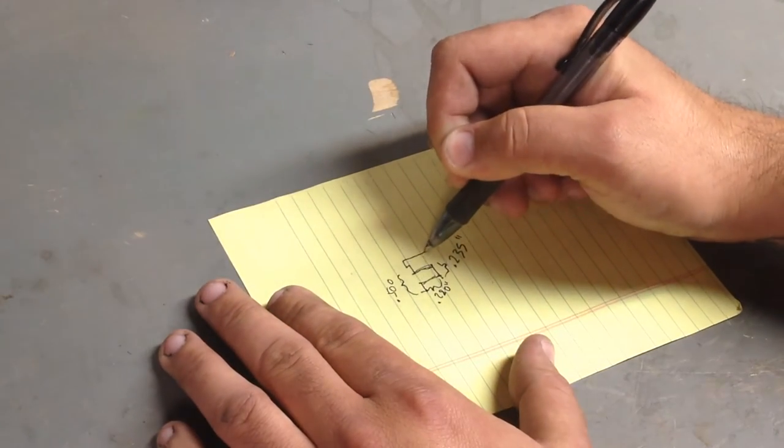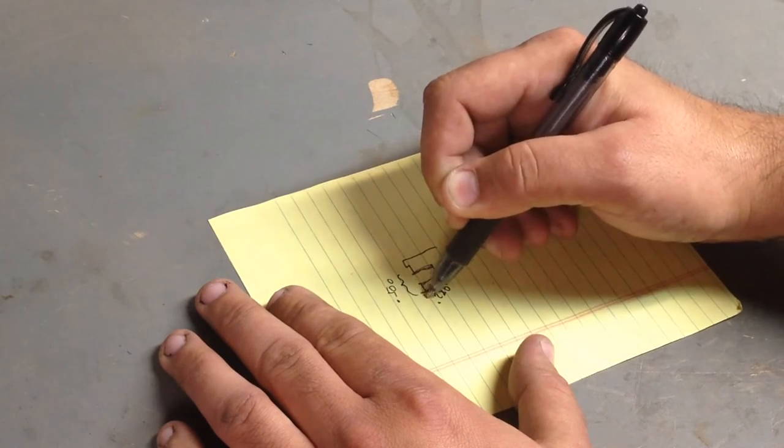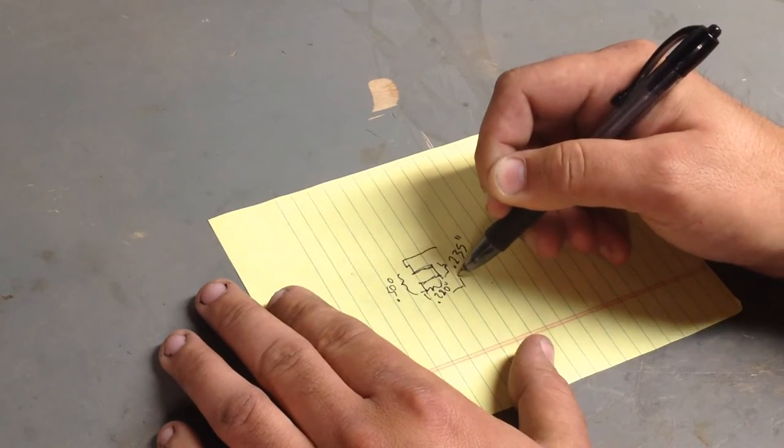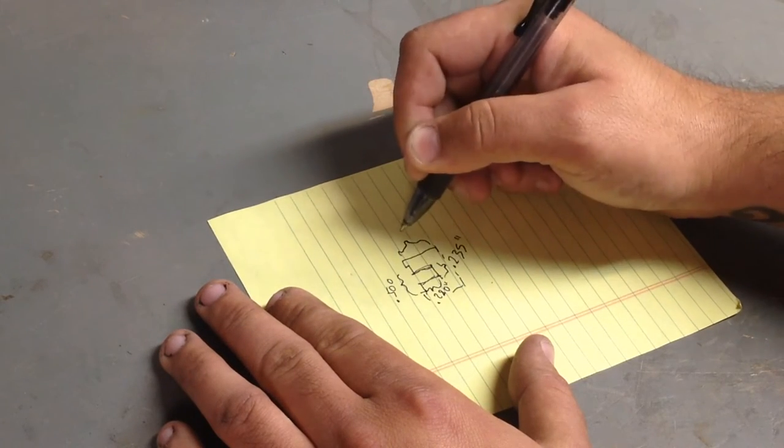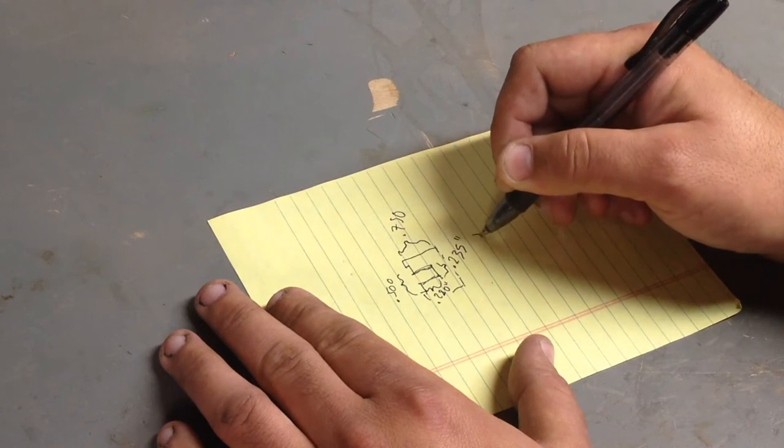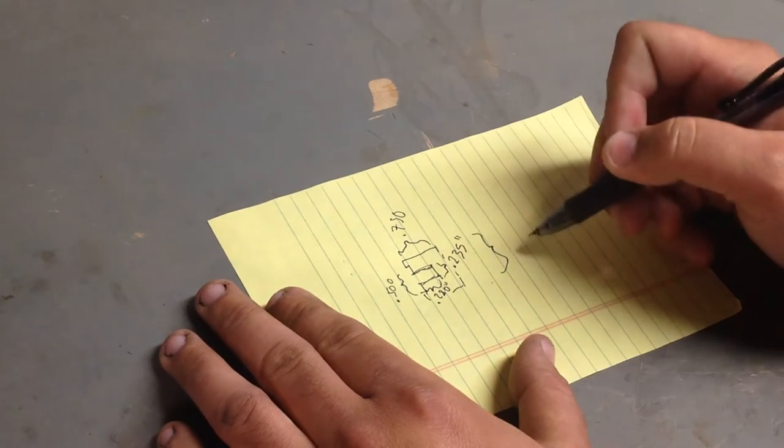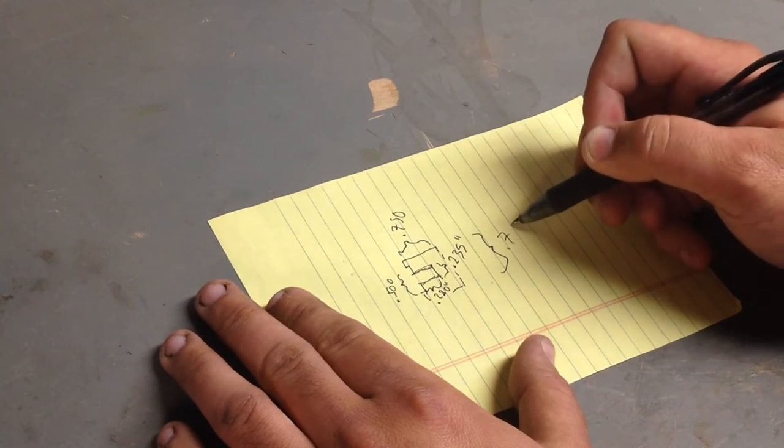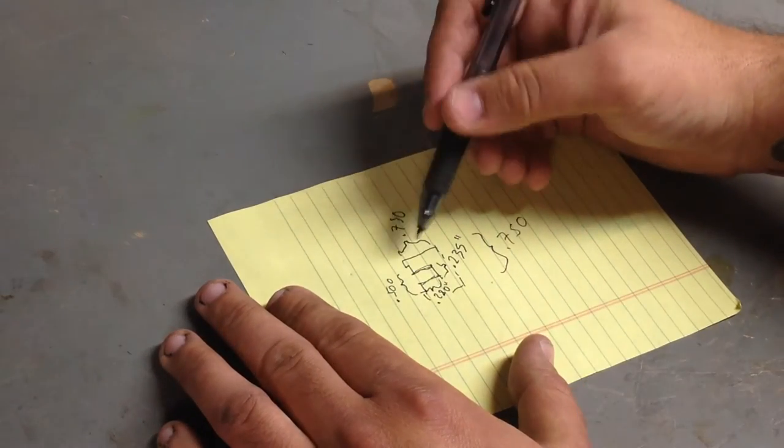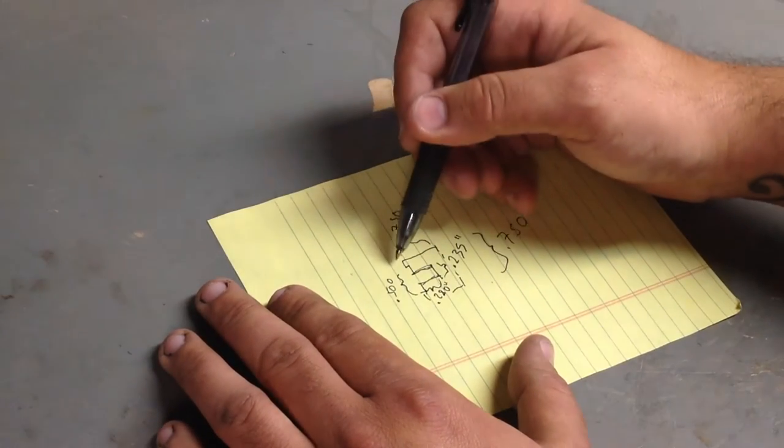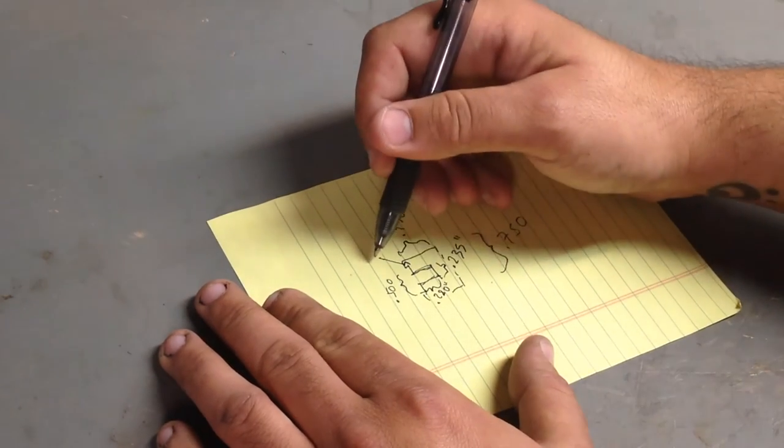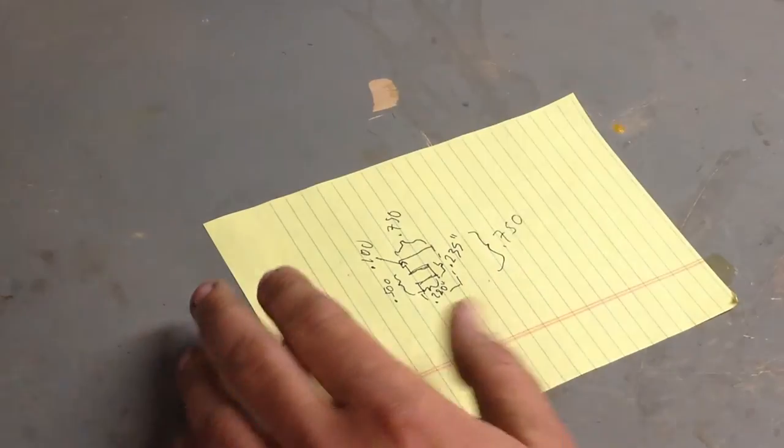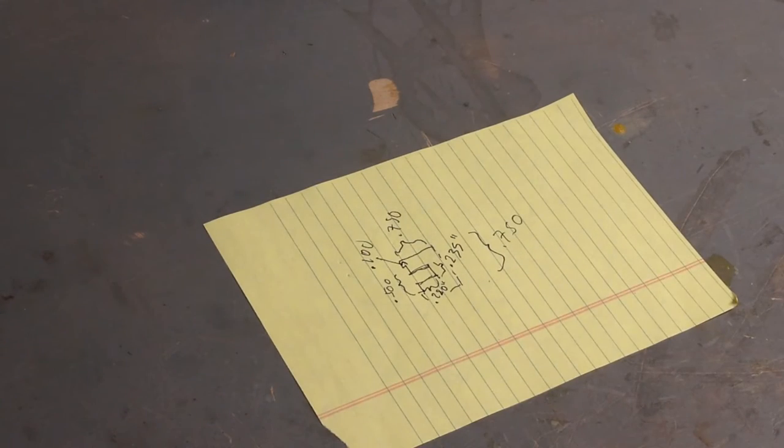And then the knob itself, my drawing is getting messy, will be .750 by .750. And I believe, it's a bit arbitrary, but I believe I'm just going to go with a tenth of an inch. That's basically what we're looking at. Hopefully it looks better than that.